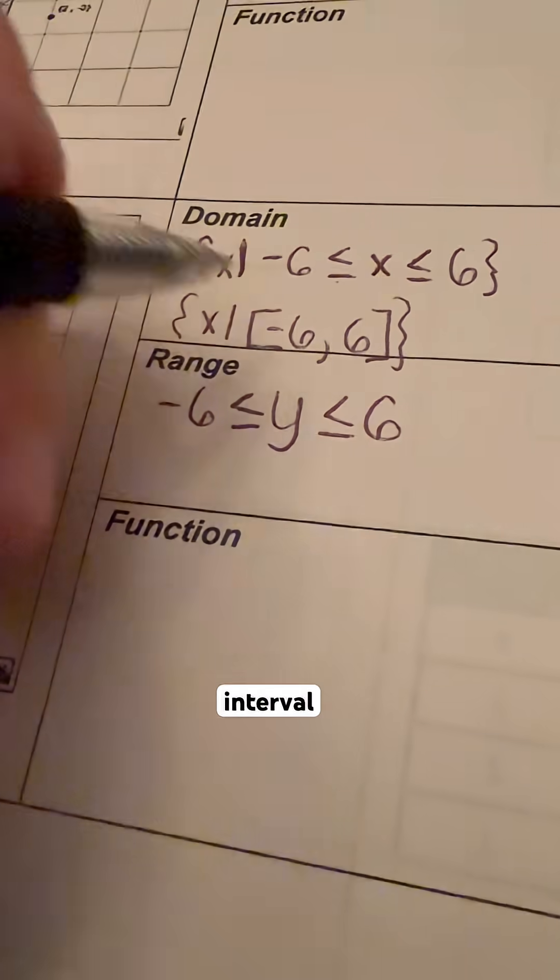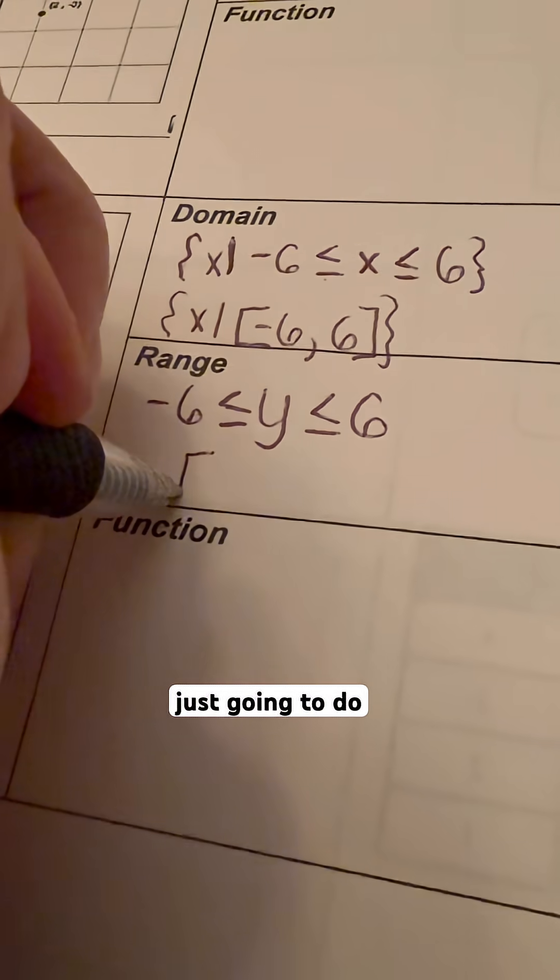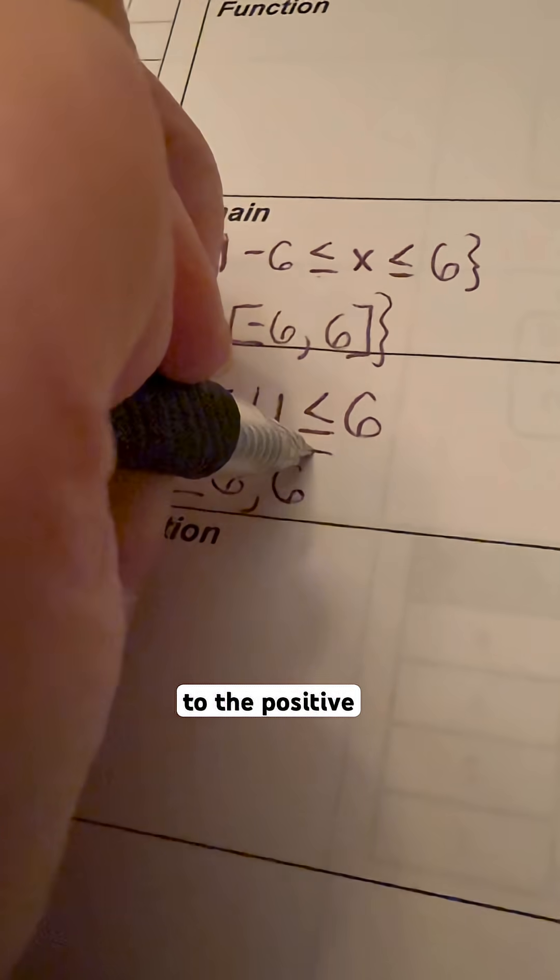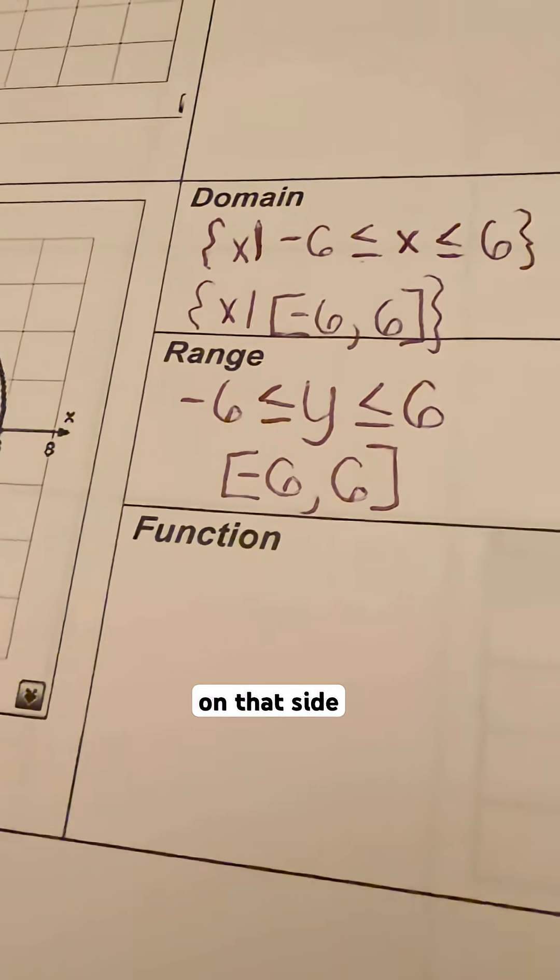And then when we are doing our interval notation, we're just going to do close bracket at negative 6, because again, it is equal to that, and it's also equal to the positive 6. So we're going to do a hard bracket on that side.